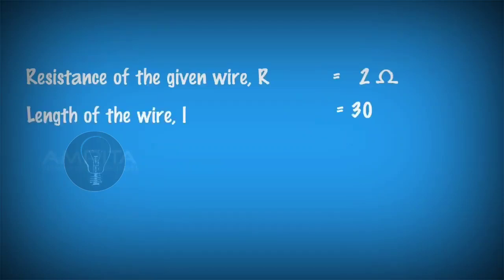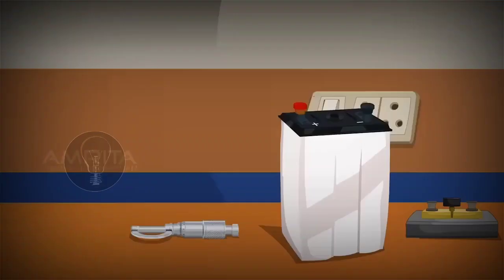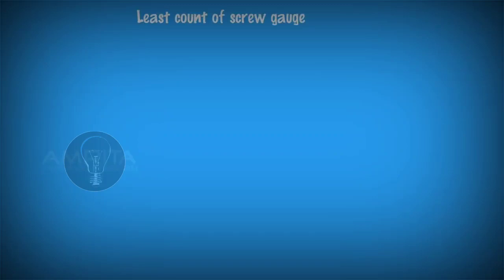Calculate the resistance per centimeter of the wire. Calculate the least count and zero correction of the screw gauge.